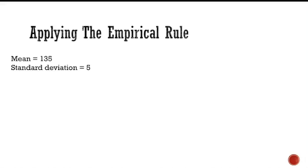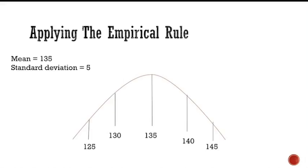To find the percentage, use the empirical rule. Since 130 is one standard deviation below the mean and 140 pounds is one standard deviation greater than the mean, the area represents approximately 68 percent of the data. Therefore, approximately 68 percent of the wrestlers weigh between 130 and 140 pounds.